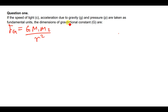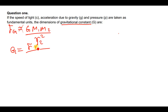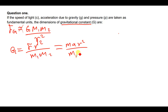Let's make G the subject of the formula. When we rearrange, G equals F·R² / (M1·M2). Since force equals mass times acceleration (F = MA), substituting gives G = M·A·R² / (M1·M2). One M cancels, leaving G = A·R² / M.